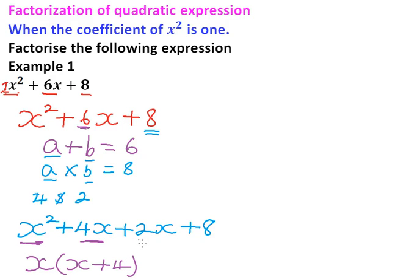We factor out what is common in 2x and 8 and it is 2 that is common. So we are left with x plus 4. Note that when you are factoring out you ensure that what is left inside the bracket is the same so that we can be able to factor it out.